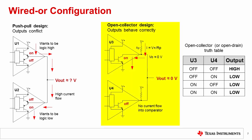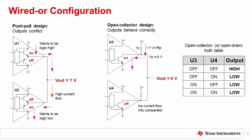Open collector or open drain comparators work perfectly with this approach. The output stage pulls the output low when the transistor turns on and looks like a high impedance when it turns off. If both outputs are low, both output transistors are on and pull the overall output down to approximately zero volts. If both outputs are high, both transistors are off, allowing the output to be pulled up to logic high through the pull-up resistors. If one output is high and one is low, the low state dominates, as the transistor that is on can sink much more current than the pull-up resistor can provide. This is equivalent to a logic OR function, commonly called the wired OR configuration.